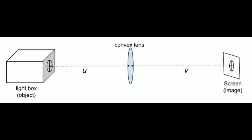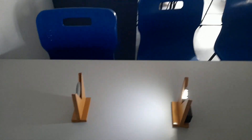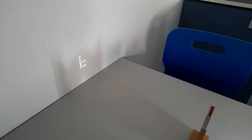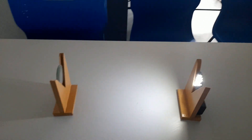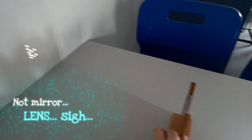The object distance is U and the image distance is V. In this setup, we're going to have a light source, a convex lens, and then a screen. I'm using the wall as a screen because it's convenient, but you can use a piece of paper. What we're going to do is adjust either the screen or the object until we get a sharp, focused image on the wall.